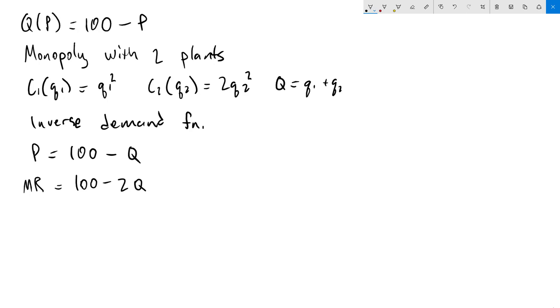We will now use the fact that capital Q, the total output, is the sum of the individual quantities, and rewrite this as MR = 100 - 2Q₁ - 2Q₂, remembering to distribute the minus sign. Next I need to find the two marginal cost functions by taking the first derivatives of each of our cost functions. For the first one, taking the derivative of Q₁² I get MC₁ = 2Q₁, and for the second one, I get MC₂ = 4Q₂.